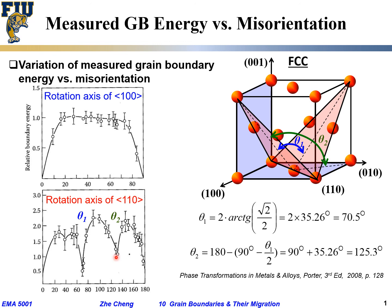So theta 1 corresponds to a true twinning boundary, while theta 2 corresponds to another plane with a decent crystallographic match. This demonstrates how grain boundary energy changes with misorientation or grain alignment. Thank you, let's stop here.